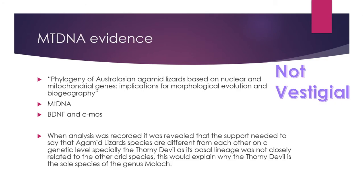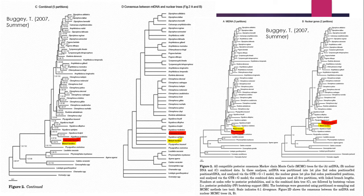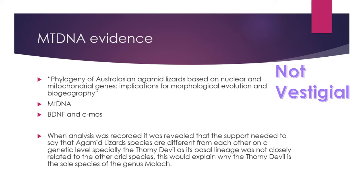I found an article called 'Phylogeny of Australian Agamid Lizards,' a research based on nuclear and mitochondrial genes and its application to morphology evolution in biogeography. In this article, it is shown that the mitochondrial DNA phylogeny was broadly congruent with previous views based upon phenotypic comparison and phylogenetic relationships. To resolve this, they used nuclear regions — the BDNF (brain-derived neurotrophic factor) and the c-mos — both compatible with the mitochondrial DNA.